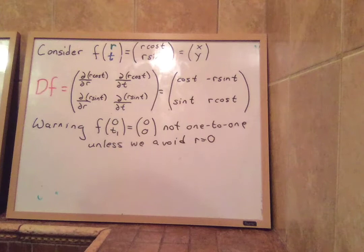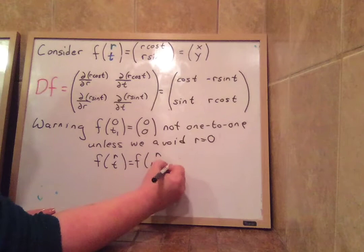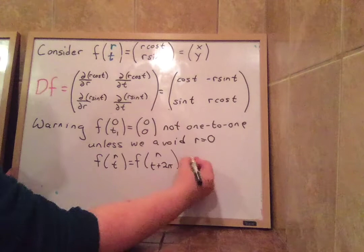We also have to avoid this problem, which is that f at any radius t is equal to f at r, t plus 2π. Because once you go around 2π, you end up overlapping itself again. So again, we have to avoid this too.